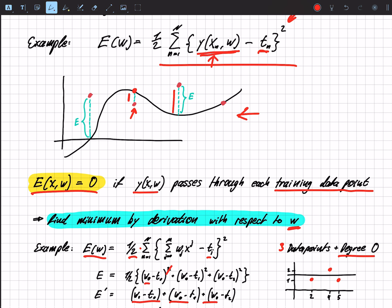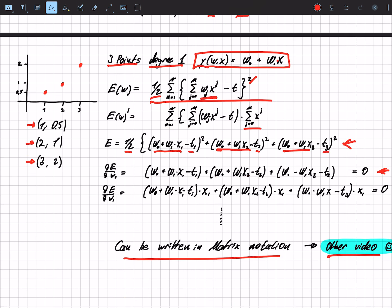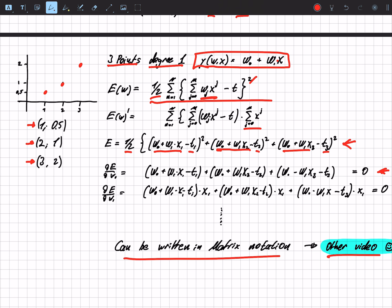And we do this, we reduce the error by deriving the error function with respect to w, this is very important. And in the easy cases we can solve this by hand and in the more complicated ones it might be advantageous to do this with a computer or even in matrix notation.